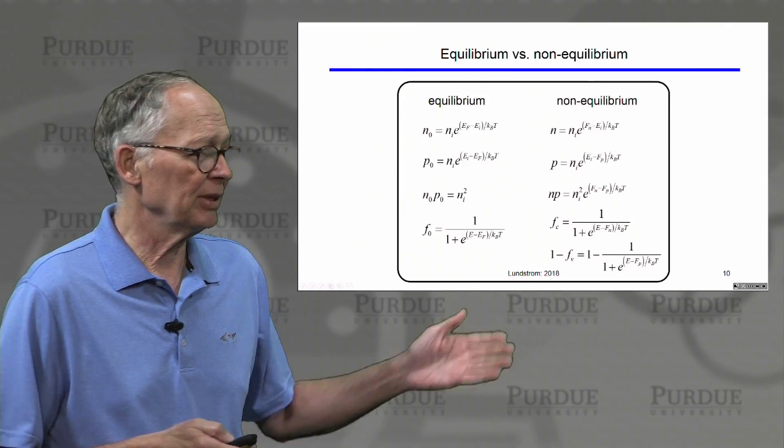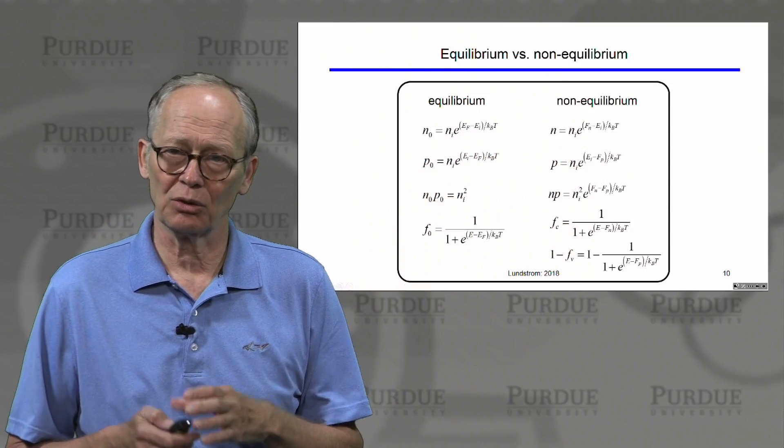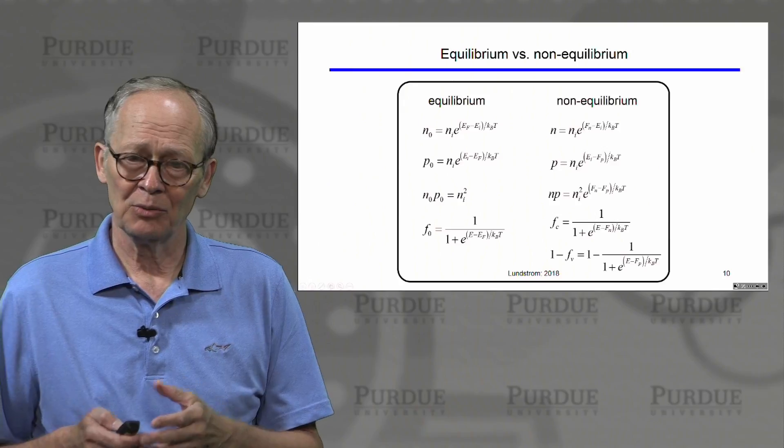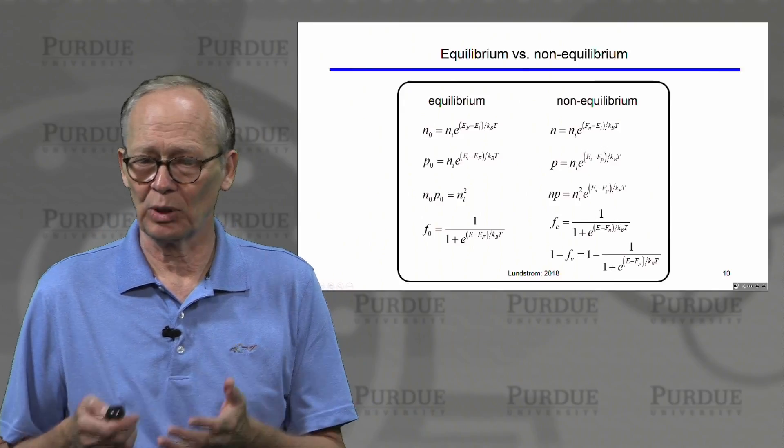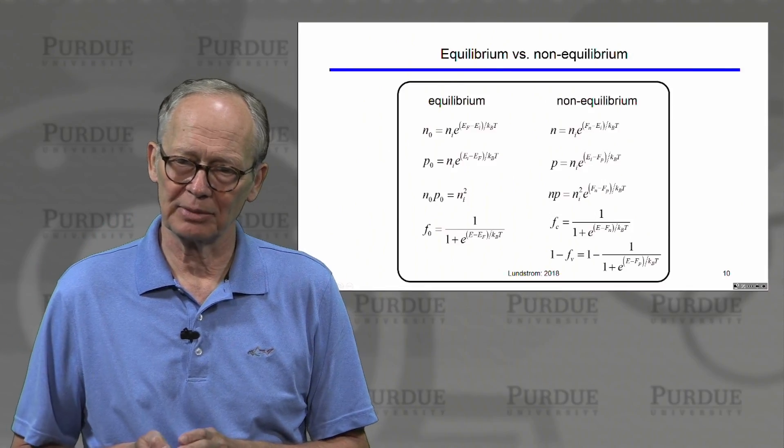Out of equilibrium, we generalize our equilibrium results by introducing these quantities called quasi Fermi levels. We need one for electrons and one for holes, and they're analogous to the Fermi level that we use in equilibrium conditions.